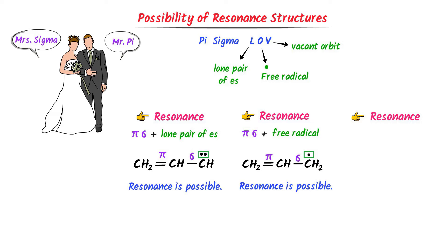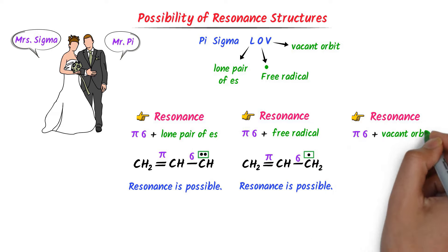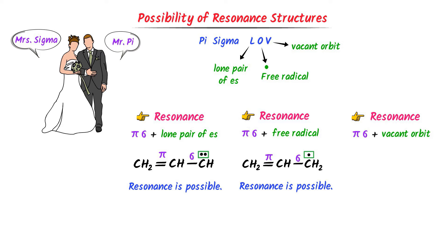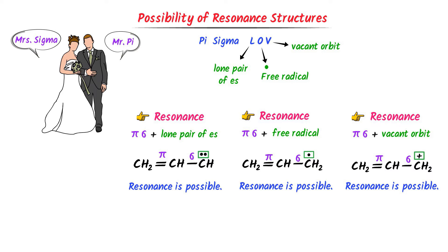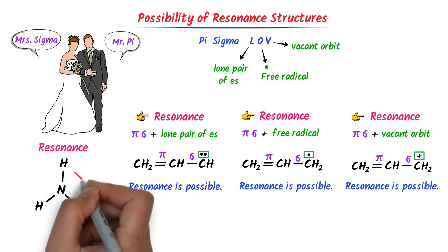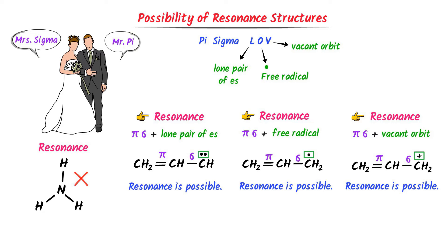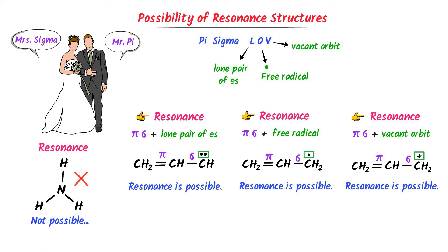Thirdly, resonance is possible if there is Pi-Sigma plus vacant orbit. For example, consider this molecule. Here, this is a pi bond, this is a sigma bond, and this positive sign means vacant orbit. Now, is resonance possible in NH3? The answer is no — there is no pi bond present in it, so resonance is not possible in NH3. Remember this mnemonic: Pi-Sigma love.